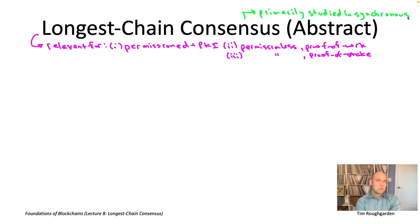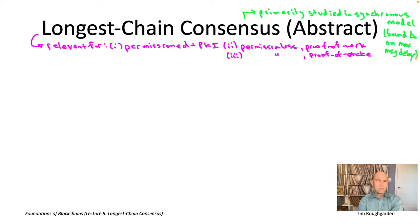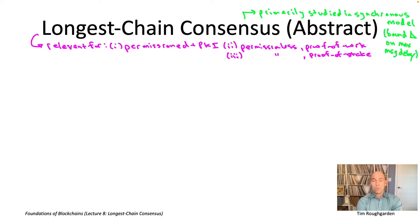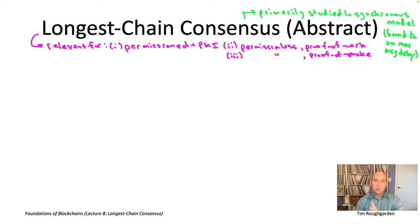Longest chain consensus works particularly well in the synchronous model — the same relatively strong assumption about network reliability we studied in lectures two and three — where there is an a priori known bound capital delta on the maximum delay any message might suffer.